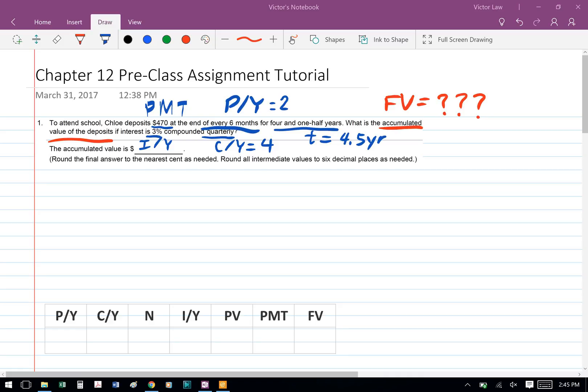The first number we see here is $470, so that's our payment, that's our PMT. The payment is made at the end of every six months, so there are two payments a year, so P/Y equals 2, and T equals 4.5 years.